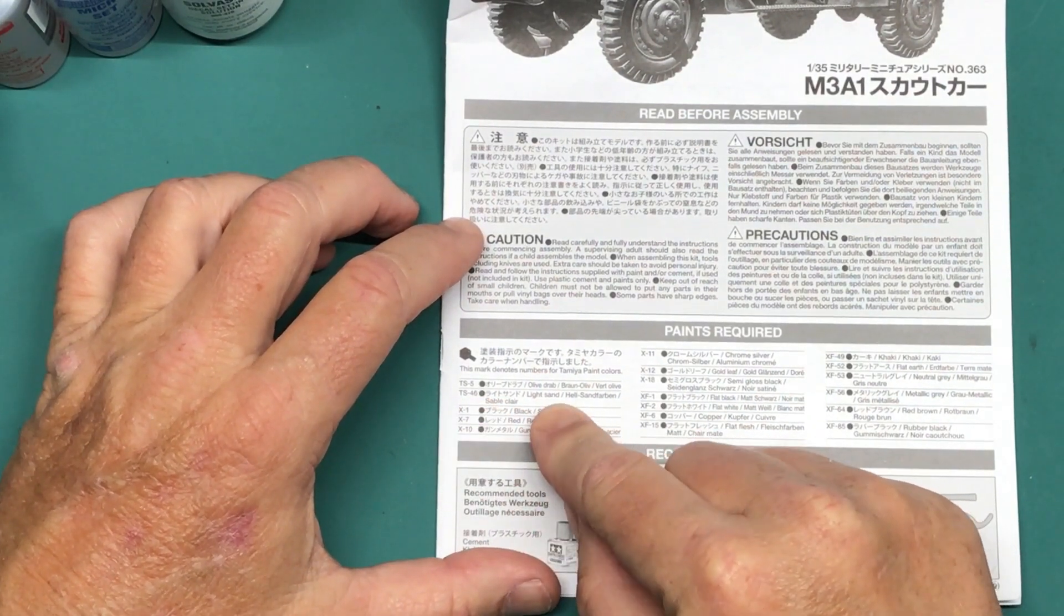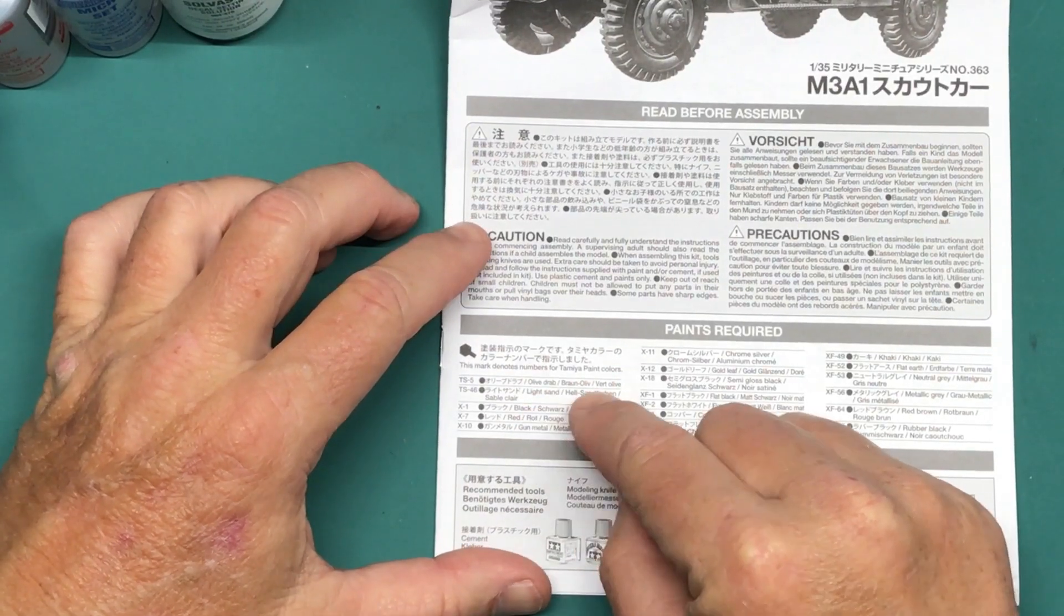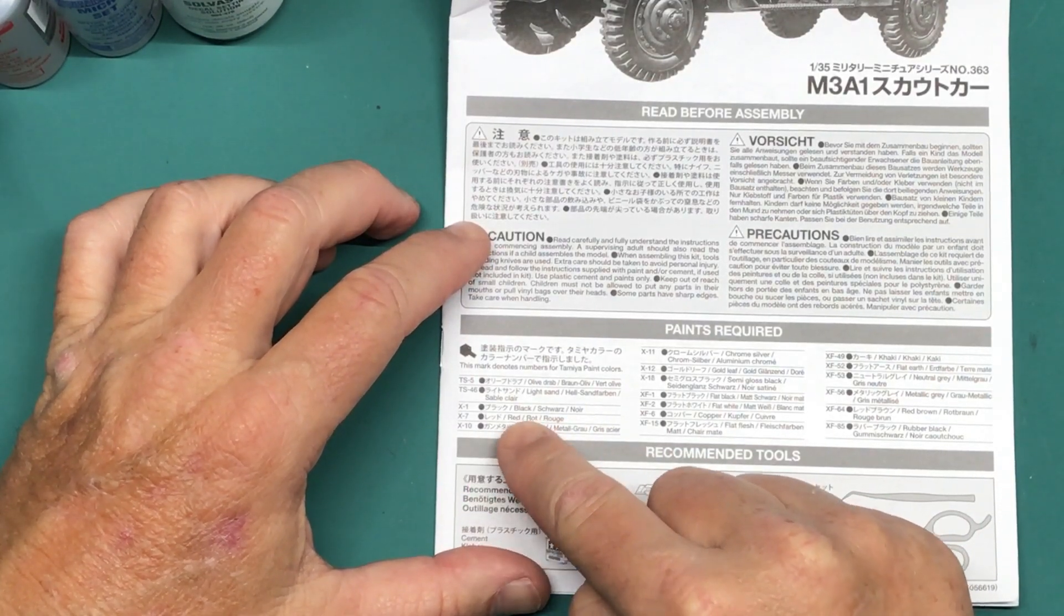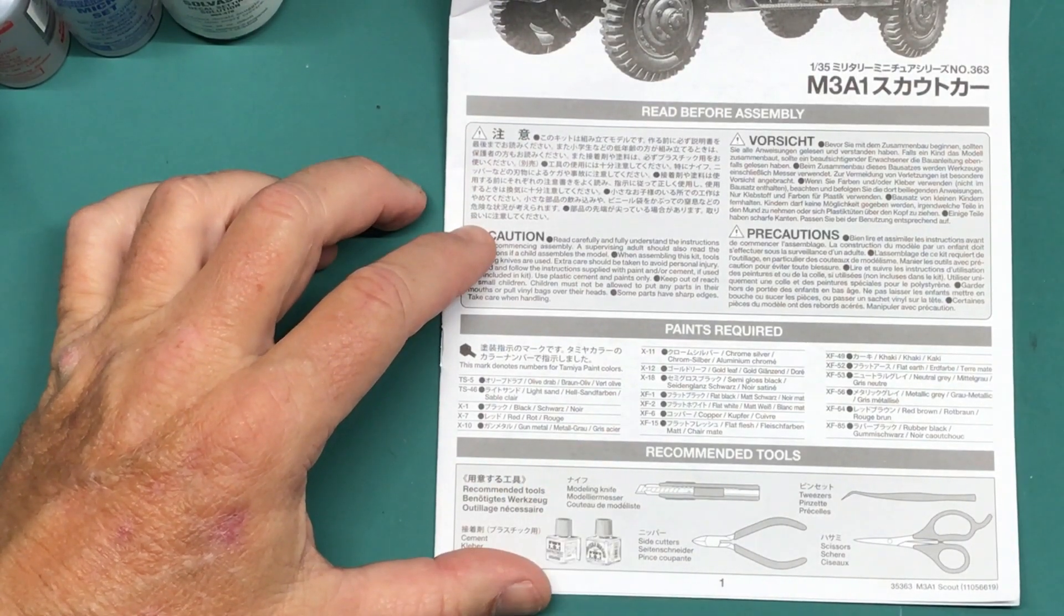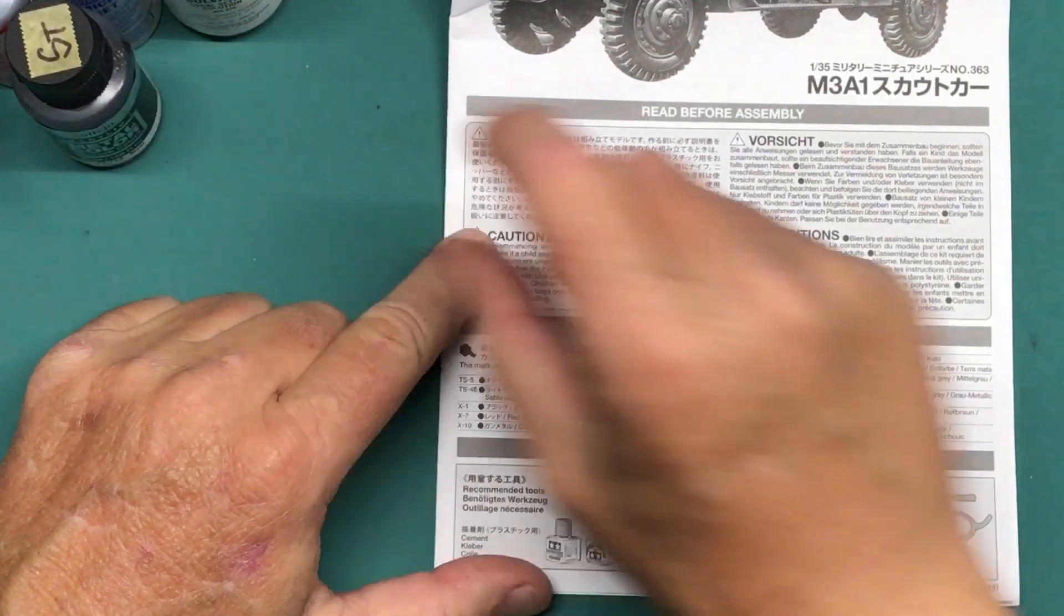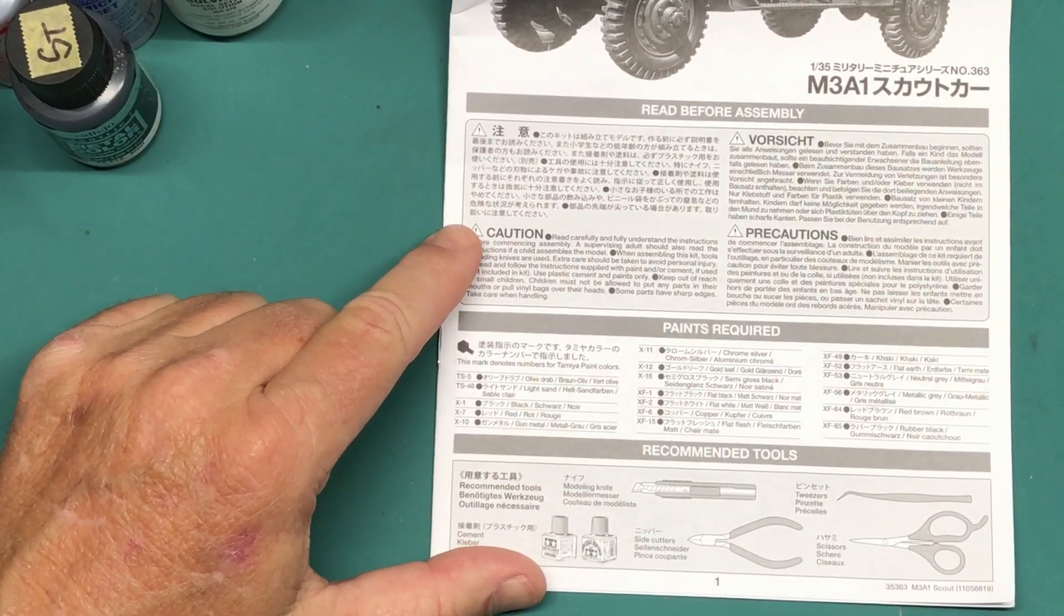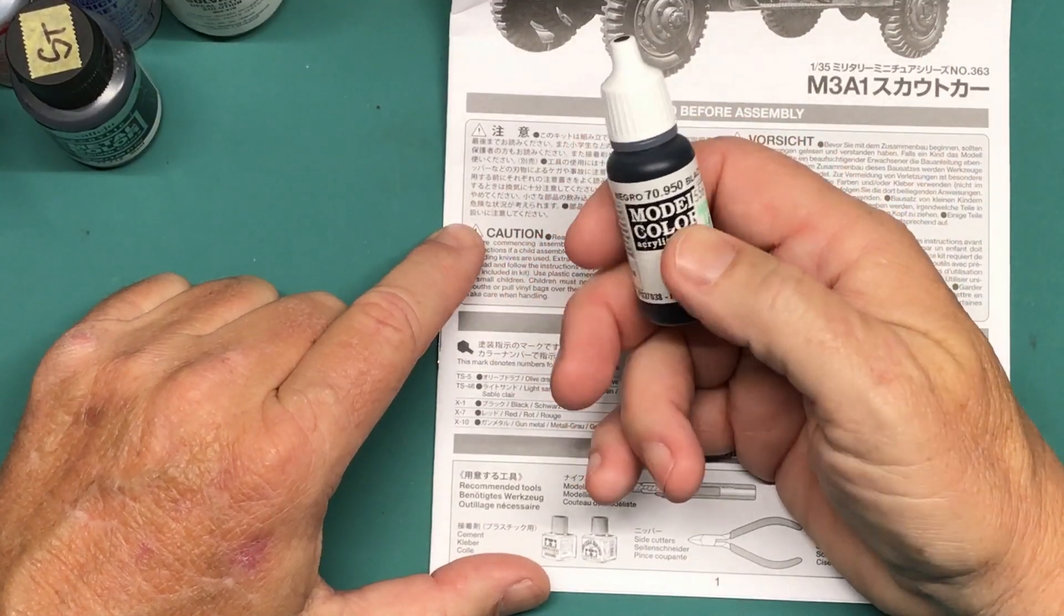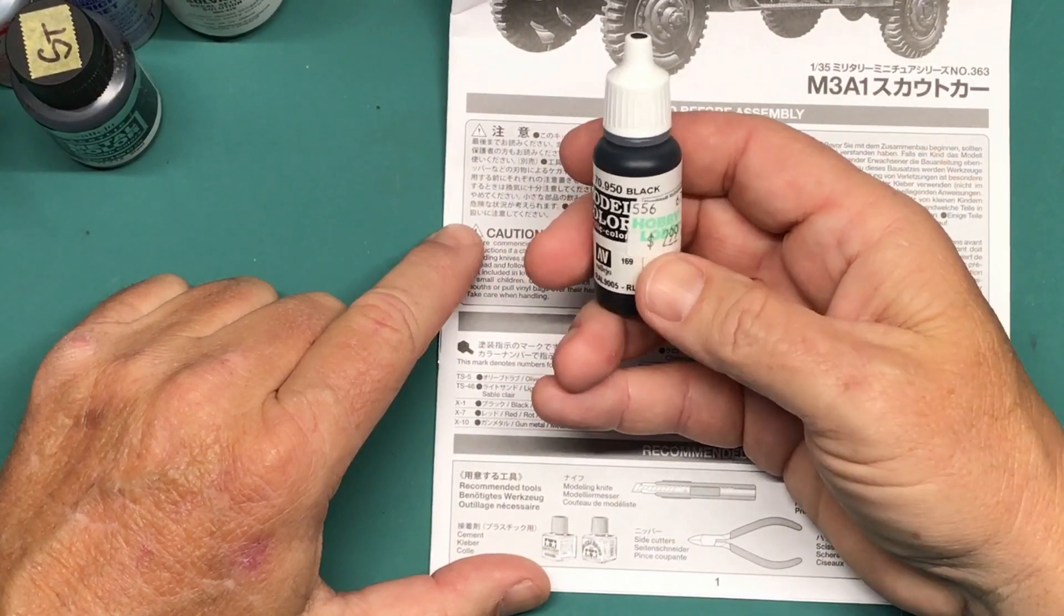Next color, which is TS46 Light Sand, I will not be using because that's for the U.S. version in Sicily. We have X1 Black, X7 Red, which the only thing that is for is for the tail light. Then we have X10, which is gun metal. So for that I'm actually going to be using Vallejo Metal Color Steel, which works pretty well and it's easy to brush on. For the black, I'm going to be using, I'm not using X1 because for brush painting I prefer to use water-based acrylics. They work a little bit better, so I'm going to be using Vallejo Metal Color Black.